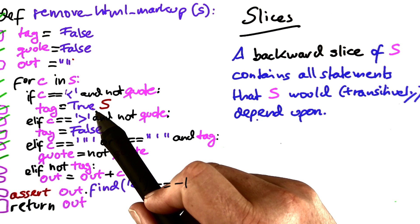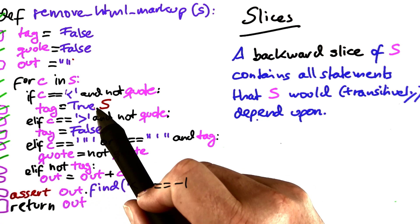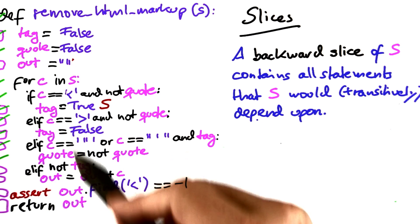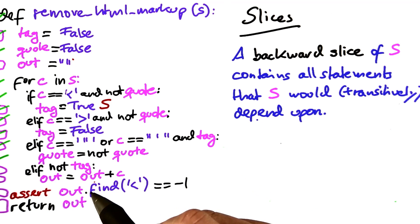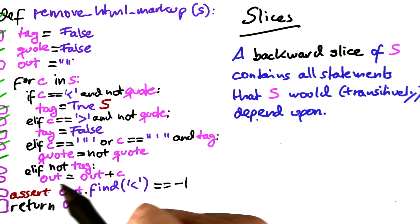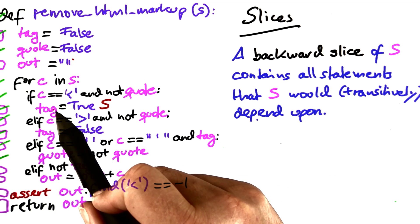It tells us if you want to know why this statement was executed. Well, we know it can't depend on out because there's no dependency of tag towards out in any way, or out cannot influence the value of tag in any way.